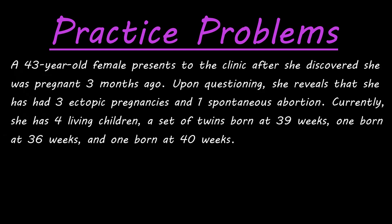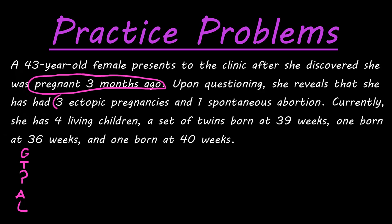Let's start with the GTPAL. Gravida is how many times she has been pregnant, regardless of the outcome. She is currently pregnant, so that's one. She has had three ectopic pregnancies, so that's plus three. One spontaneous abortion is another one.